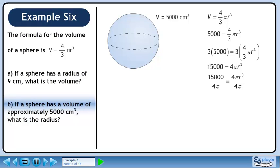Divide both sides by 4 pi to isolate r cubed. This gives us r cubed equals 1193.6620 continuing.